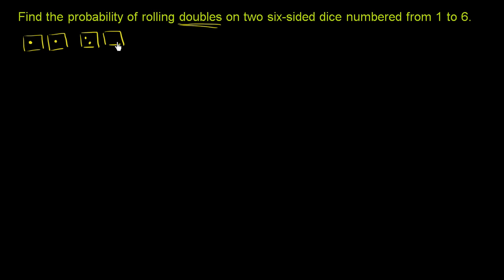A 2 and a 2, that is doubles. A 3 and a 3, a 4 and a 4, a 5 and a 5, a 6 and a 6. All of those are instances of doubles.